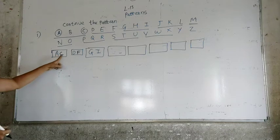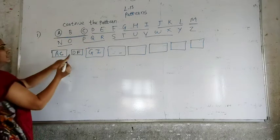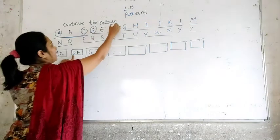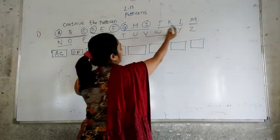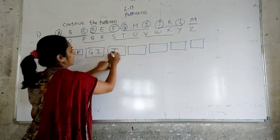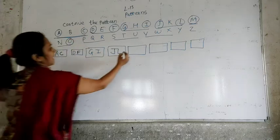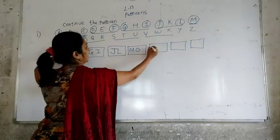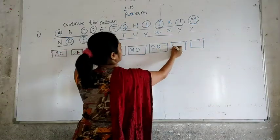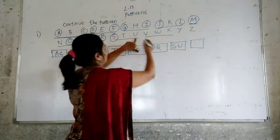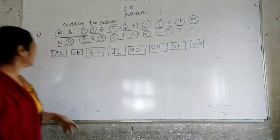Now in this alphabet pattern: the first pair is AC, then DF, then GI. So A and C — two alphabets skipping one. Then D and F skipping E. Then G and I skipping H. The next pair is J and L, then M and O, then P and R, then S and U, and then V and X.